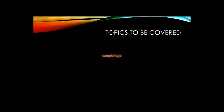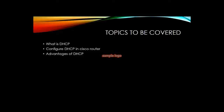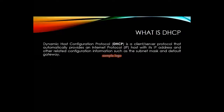Let's see what we will cover today. We'll see what is DHCP, we'll configure DHCP in a Cisco router using Cisco Packet Tracer, we'll check the advantages of DHCP, and also get to know some disadvantages. DHCP is a client-server protocol that automatically provides an IP host with its IP address and other related configurations.